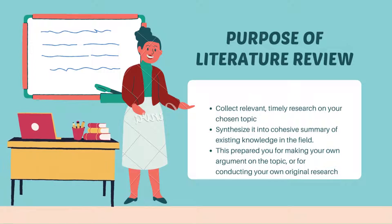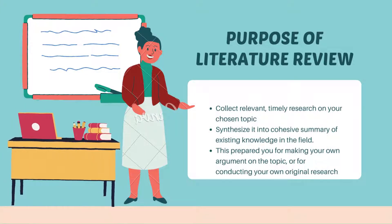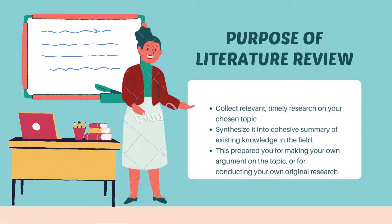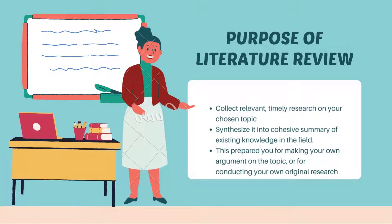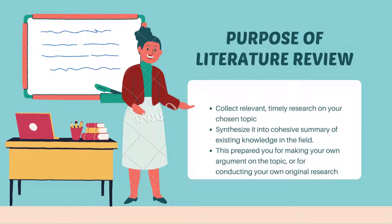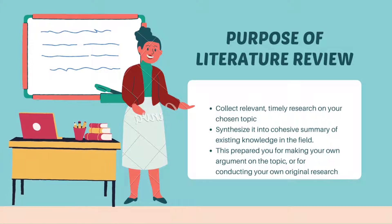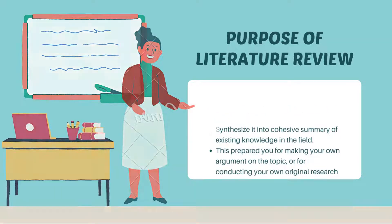Within your review of a given source, you can cover many different aspects including the purpose, scope, methods, results, any discussion points, limitations, and implications for future research. Make sure you know which model your professor expects you to follow when writing your own literature reviews.